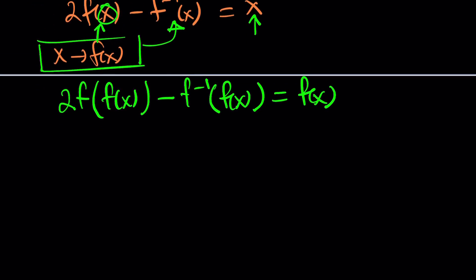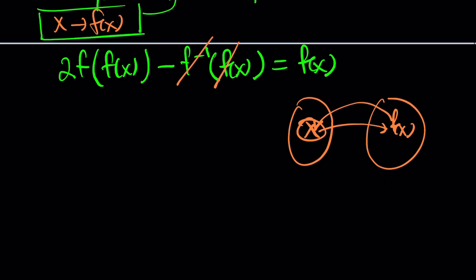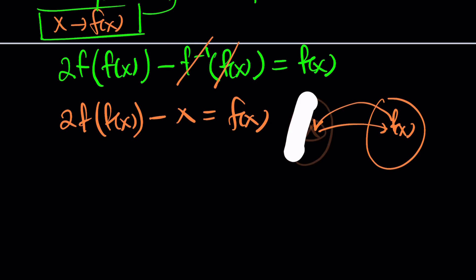Just like evaluating a function at a point. Now this gives us something nice, because f inverse of f of x is just x. f takes x to f of x, and then f inverse takes it back. They cancel out and leaves us with 2 times f of f of x minus x equals f of x. And this is just awesome. You can call this equation number three if you want.